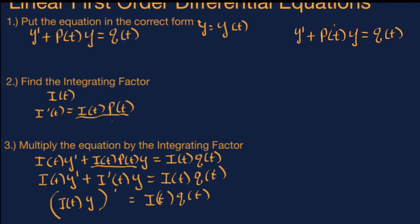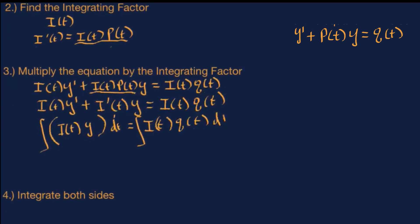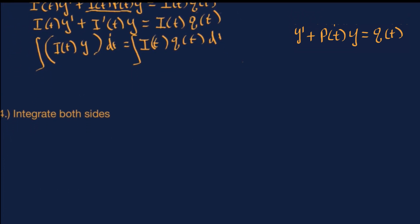So the derivative of i(t) times y equals i(t) times q(t). Now to get rid of this derivative, we integrate both sides. When you do that, on the left side you get i(t) times y plus the constant of integration, and that equals the integral of i(t) times q(t) dt.